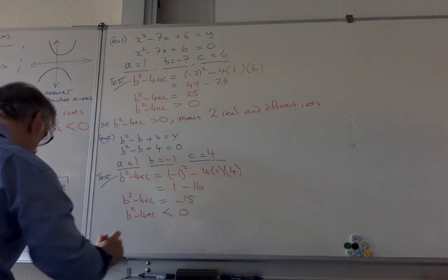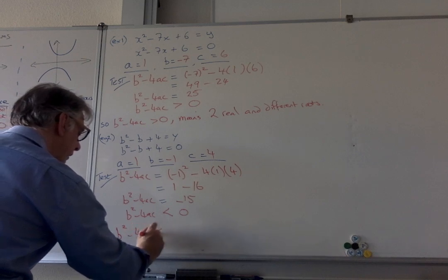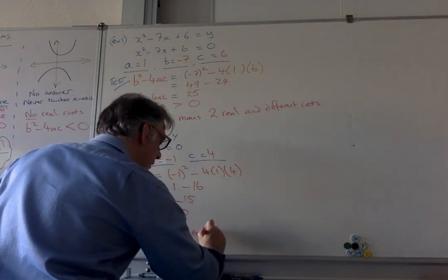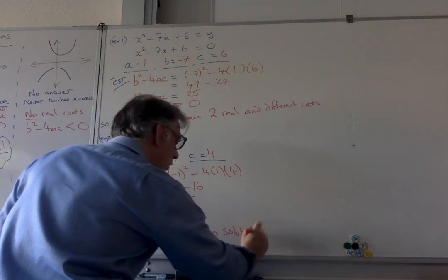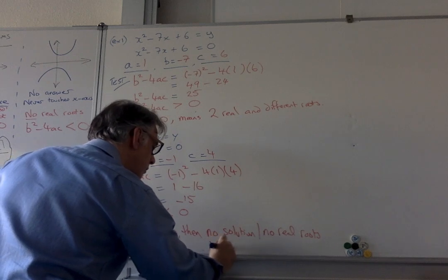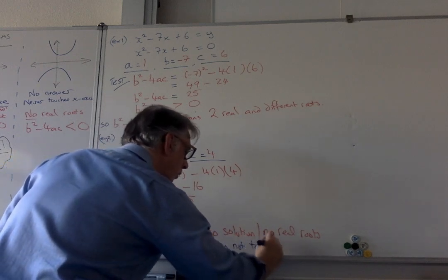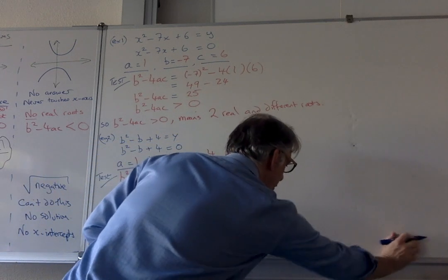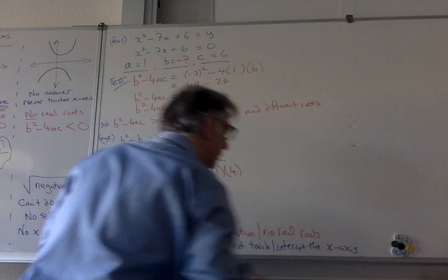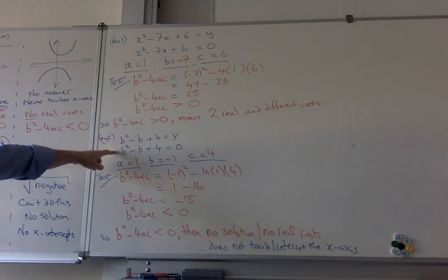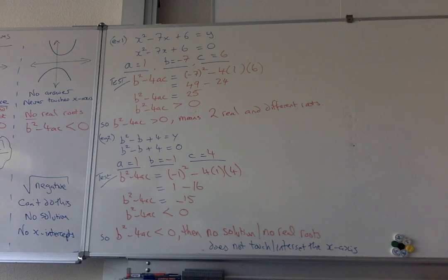And what does that mean? Well, if b squared minus 4ac is less than zero, then you've got what? Then there's no solution or no real roots. And in terms of a graph, it does not touch or intersect the x-axis. So then there's no solution or there's no real roots to this equation. When this is set to zero, there's no real roots is what we say. There's no intercept. It doesn't touch or intersect the x-axis.